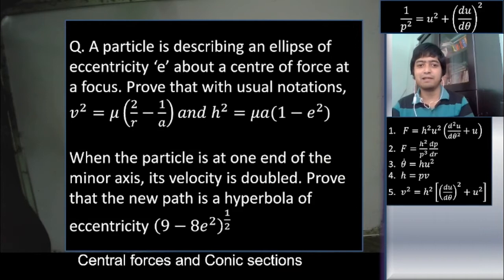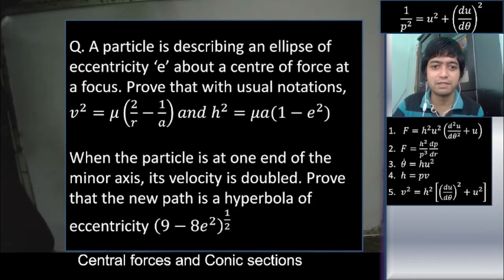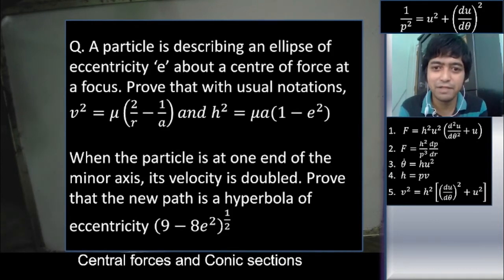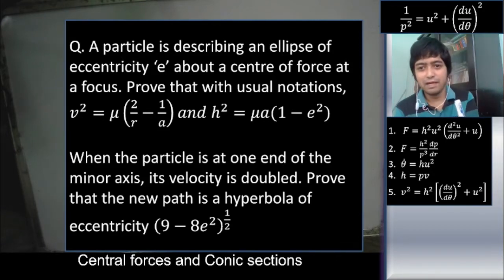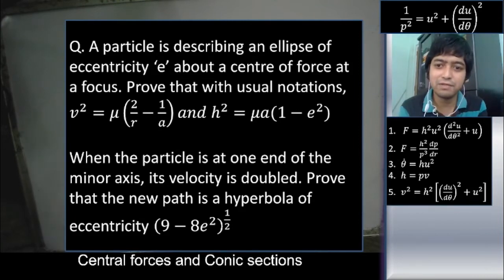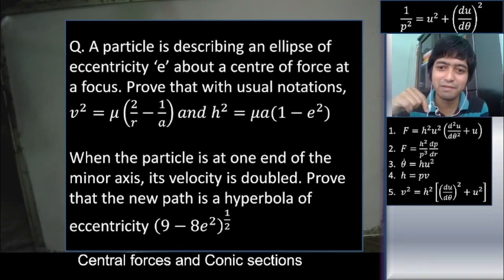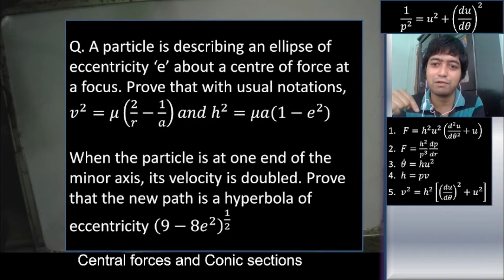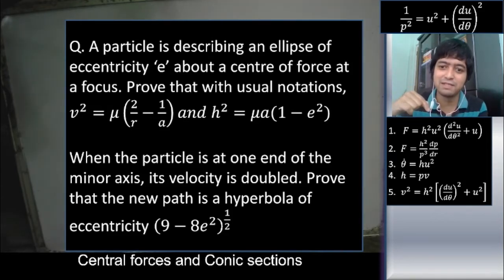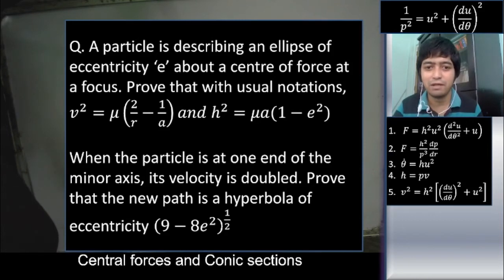A particle is describing an ellipse of eccentricity e about the center of force at the focus. We don't have any idea of what the force is, so let us try to find it. We can use either polar equations or pedal equations. If using polar equations, use the first equation below involving u = 1/r and θ. If using pedal equations, use equation 2: f = h²/p³ · dp/dr. For this example, let us use the pedal equation of the ellipse.